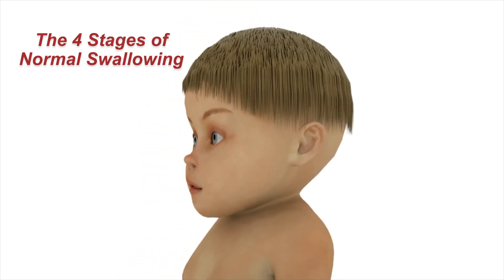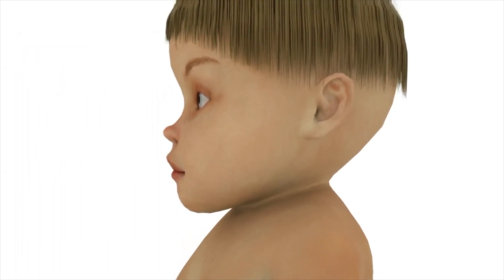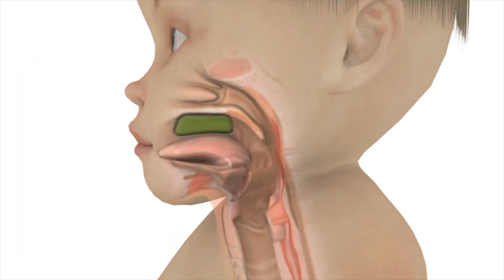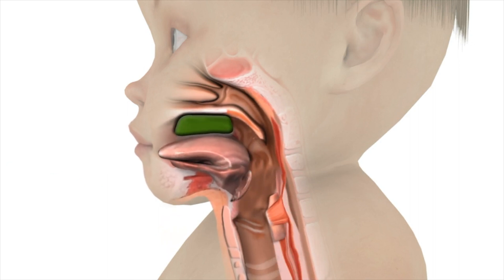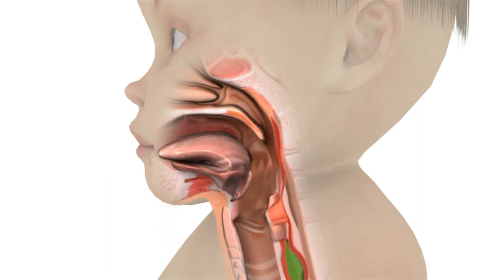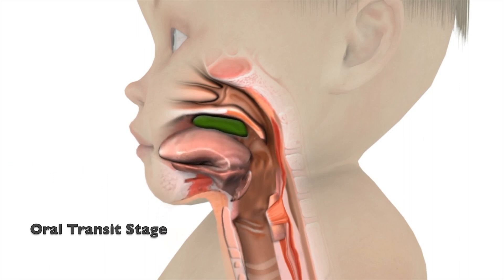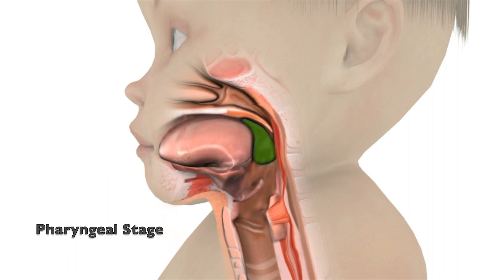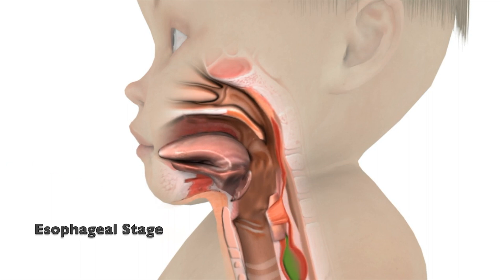With a normal swallow, food and liquids move from the mouth into the esophagus directed by a precise sequence of coordinated muscle movements. In order to adequately describe the biomechanics and bolus movement during swallow, the four stage model was developed. Let's slow down the animation in order to more clearly appreciate what happens during a normal swallow. The four stages are: oral preparatory stage, oral transit stage, pharyngeal stage, and esophageal stage.